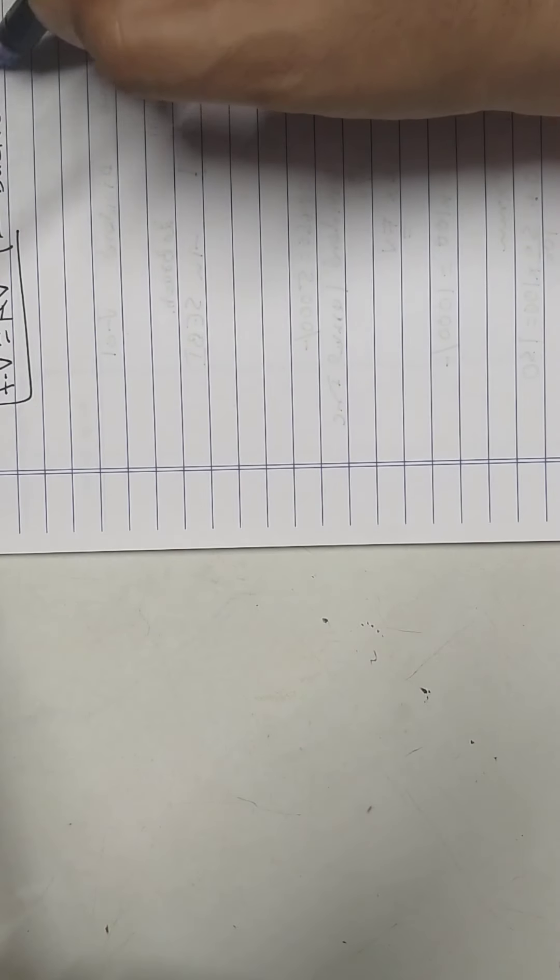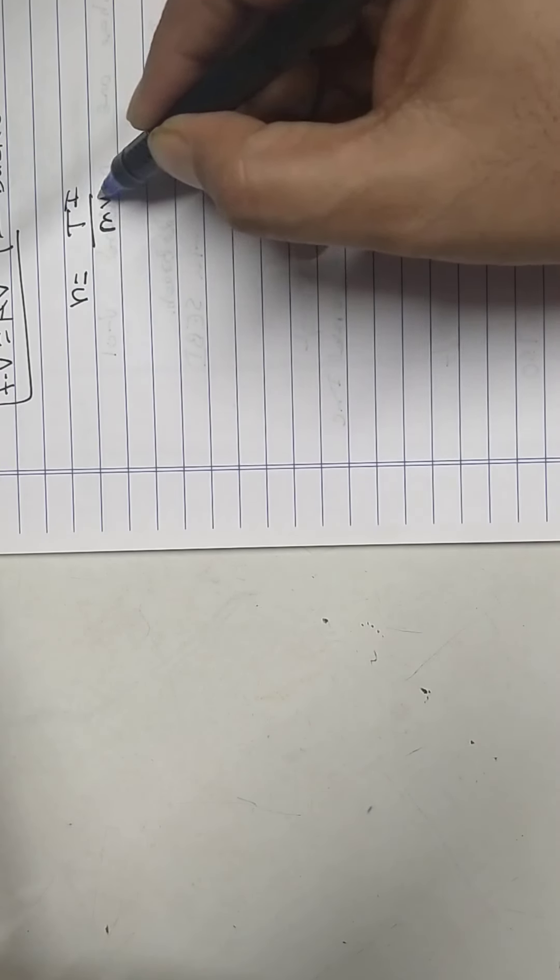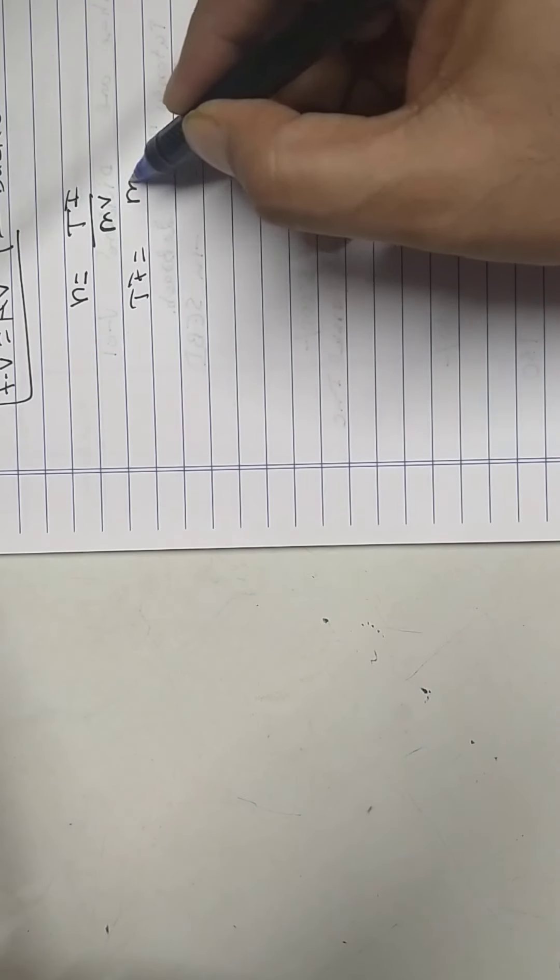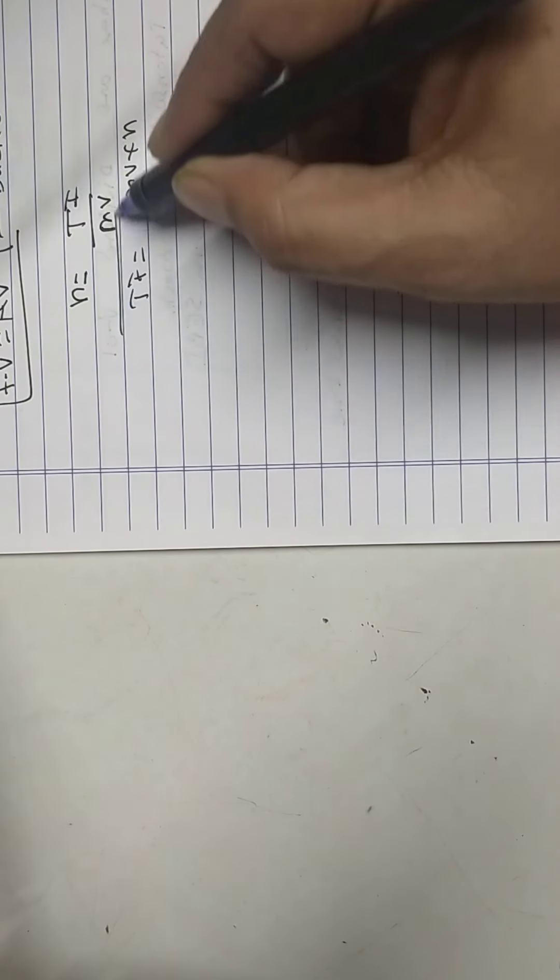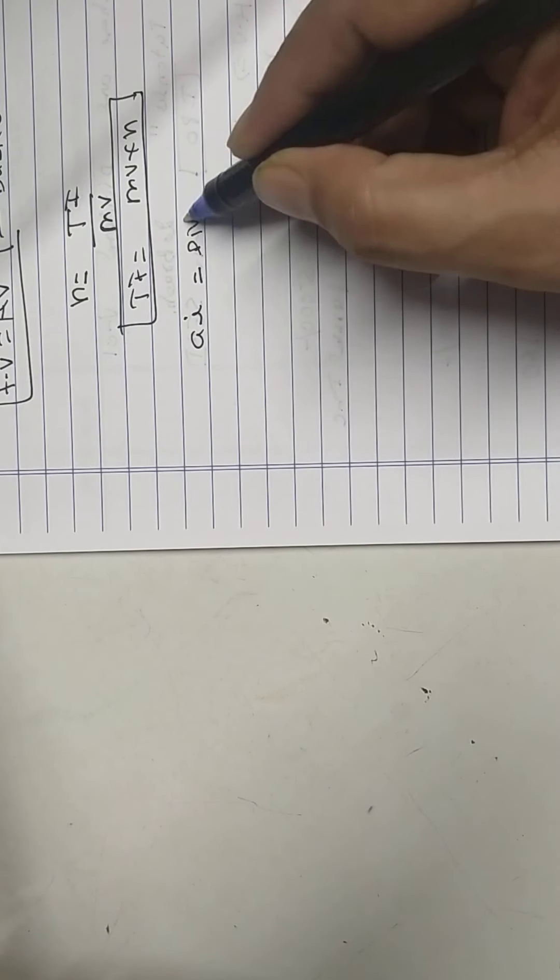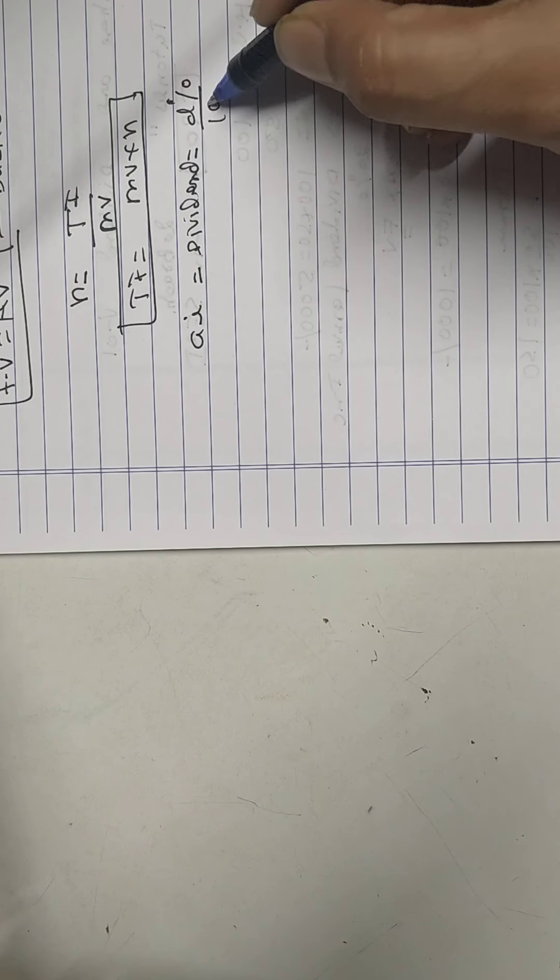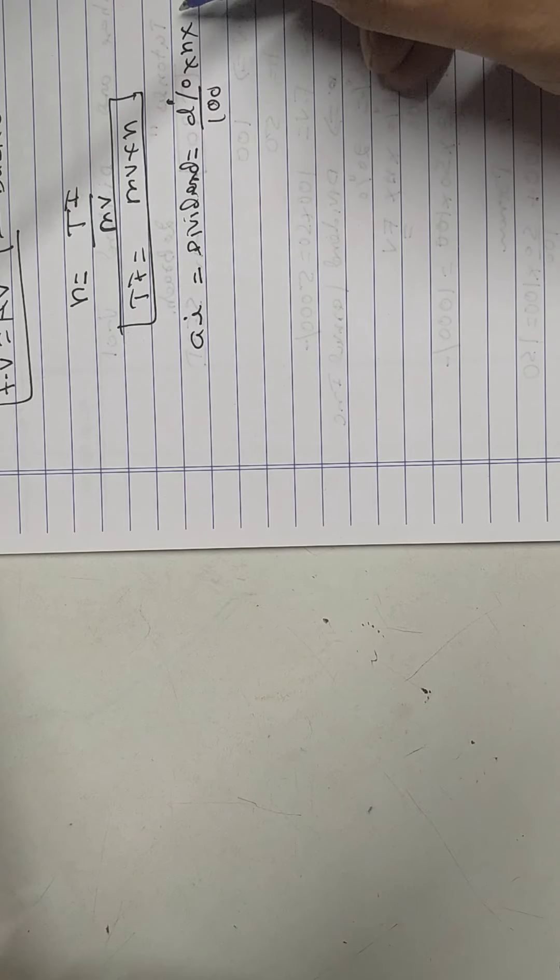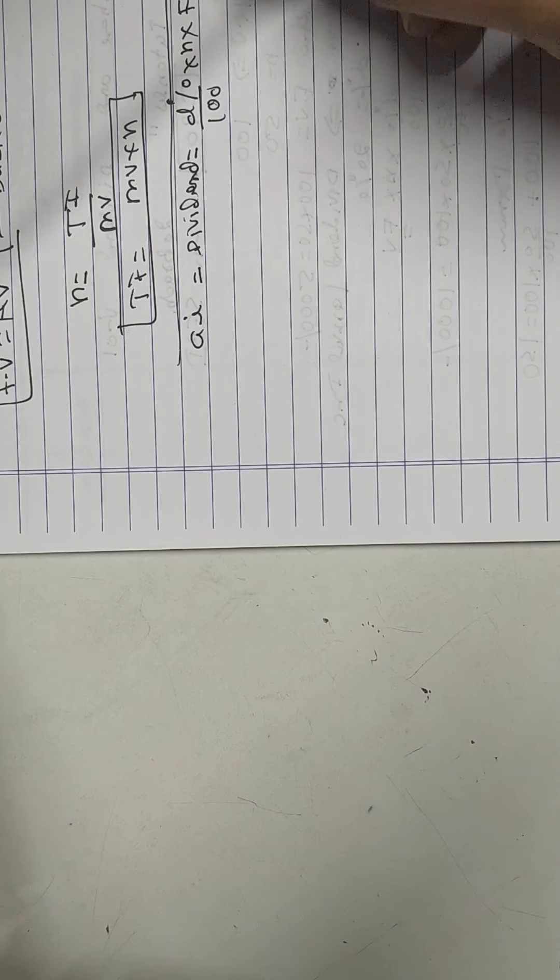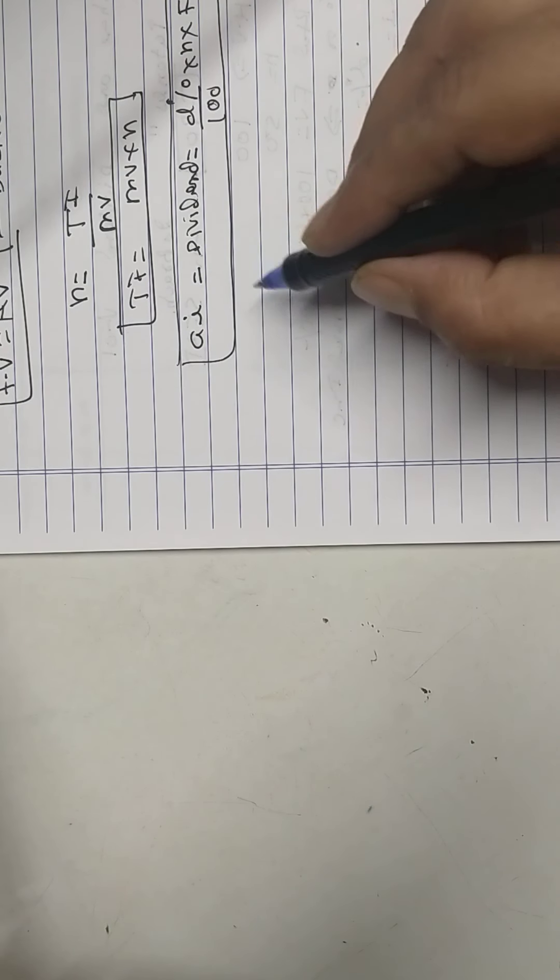Now I will give you all the formulas. Once you get all the formulas, we can start the sums. FV or NV - face value or nominal value - is the basic price of share. Number of shares is total investment upon market value, or total investment is market value into number of shares. This is the first formula.